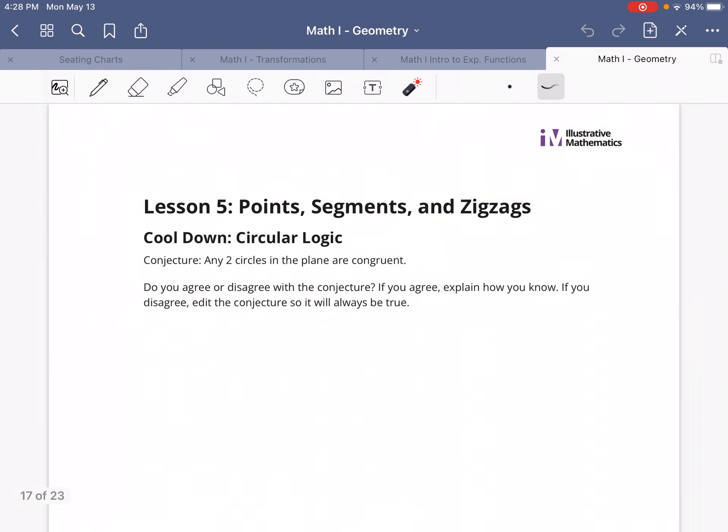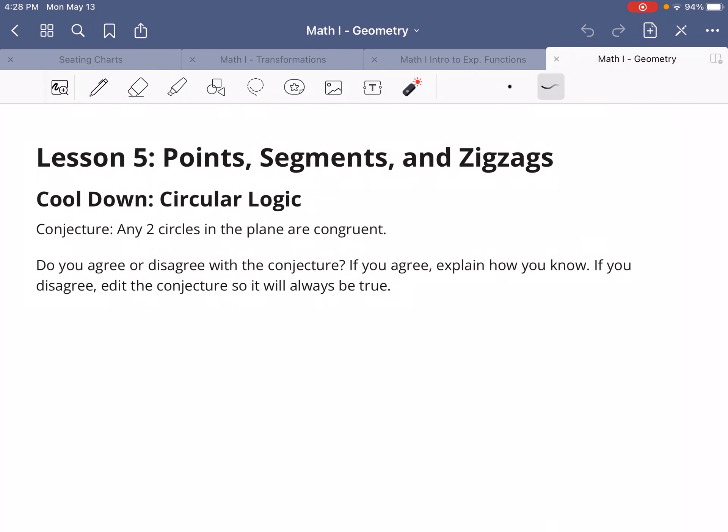Now, how that applies to our cooldown. Conjecture—this is like an educated guess, like a hypothesis. The conjecture is, any two circles in the plane are congruent.